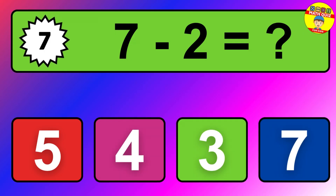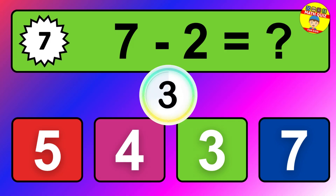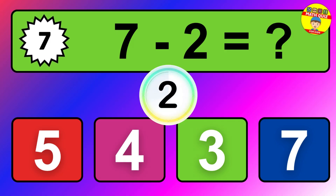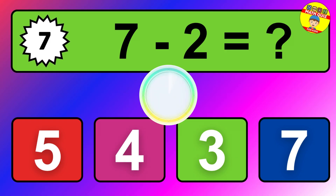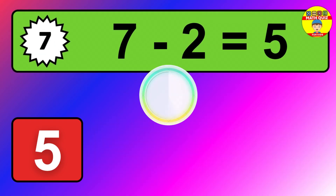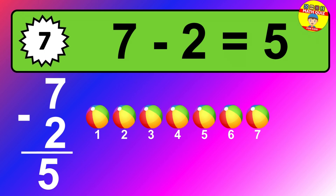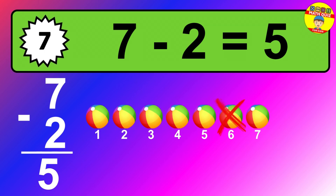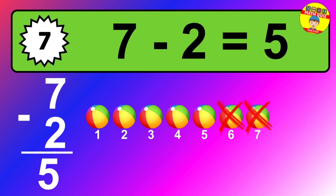Question 7. 7 minus 2 equals what? So the answer is 7 minus 2 is 5. Let's count it. 1, 2, 3, 4, 5.